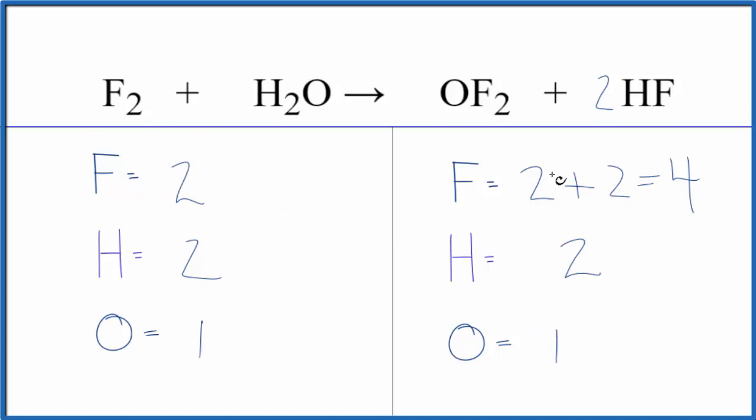Because if we want to get the fluorine to balance here with this fluorine here, we just need to double it. If we put a two in front of the F2, two times two, that would give us four, and we're done.